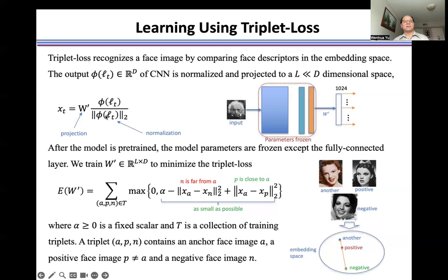This is the normalization factor and this is the projection matrix. After the model is pre-trained, the model parameters are frozen except the fully connected layer.